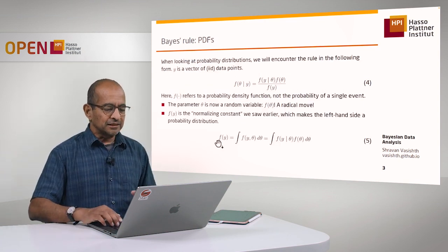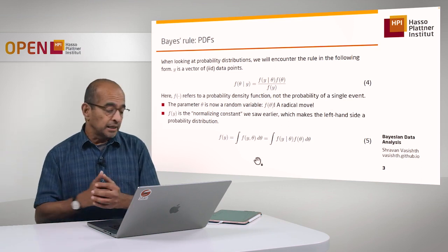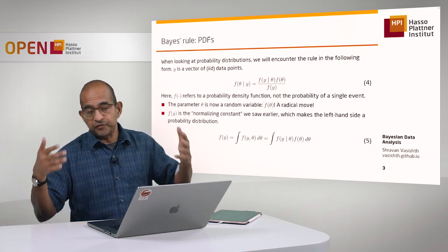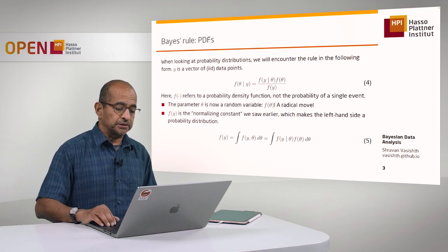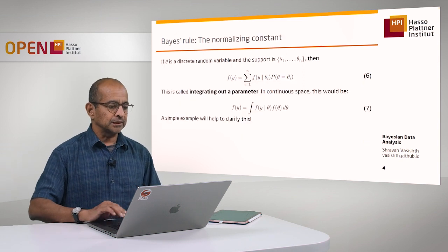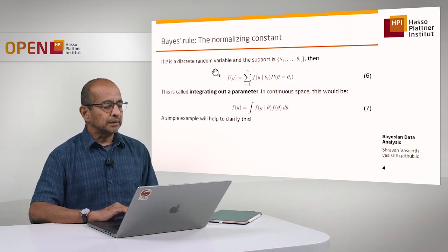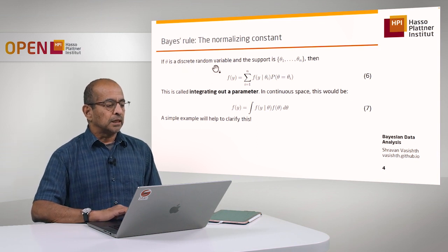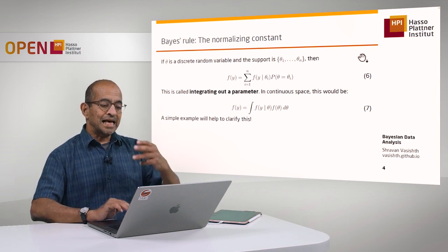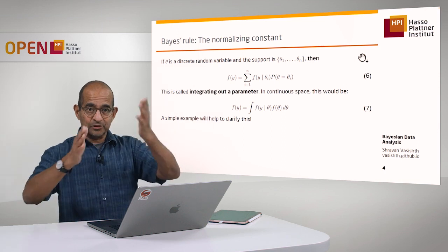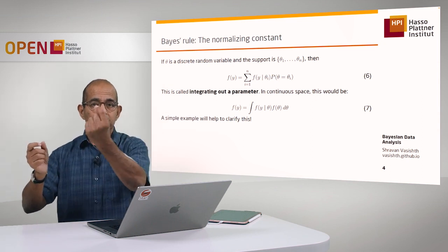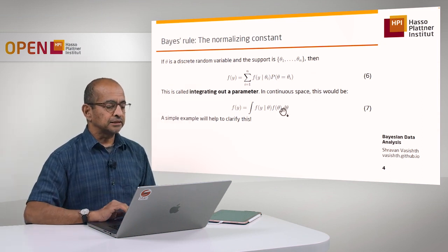This integral is very scary to look at, and maybe we have no idea how to solve it — because we've forgotten how to do integrals, or maybe never learnt them in the first place. It doesn't matter, because I will show you the intuition using a discrete example. Think of a discrete case where we have a random variable that is the parameter theta, and this random variable has some discrete values associated with it. You could have a probability parameter in the binomial with discrete possible values like 0.1, 0.5, and 0.9.